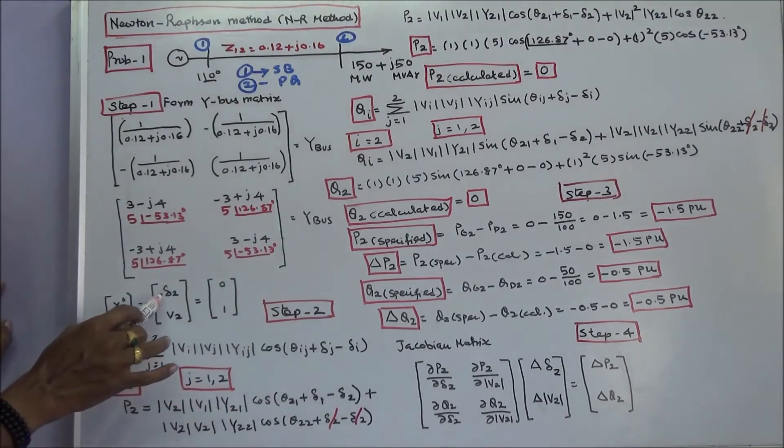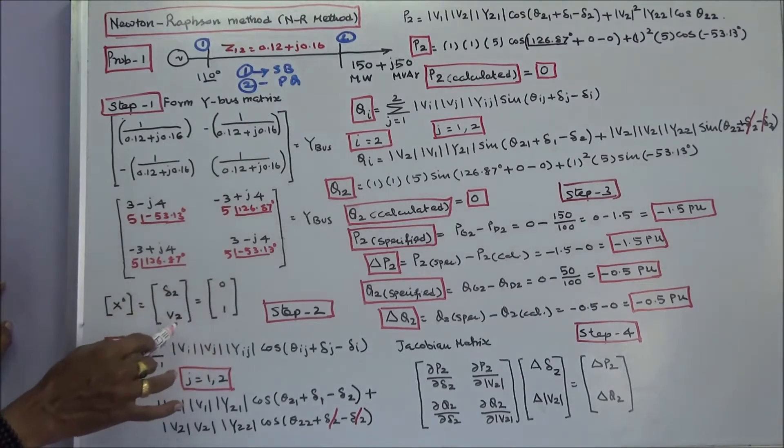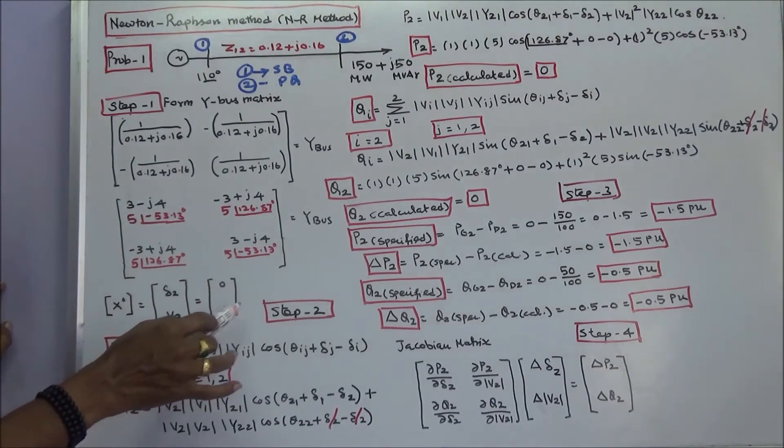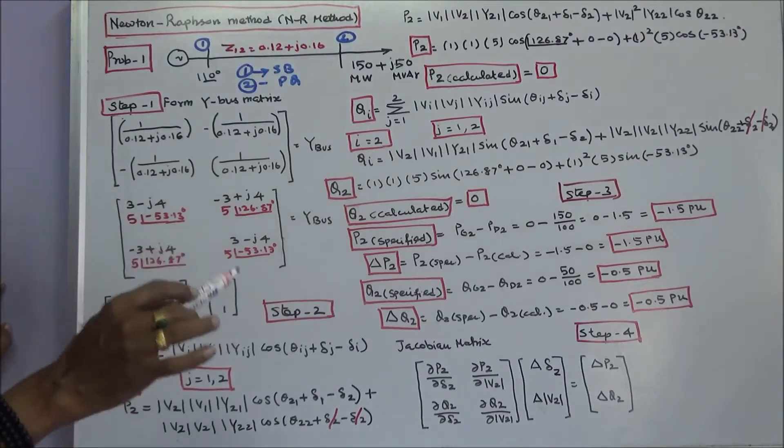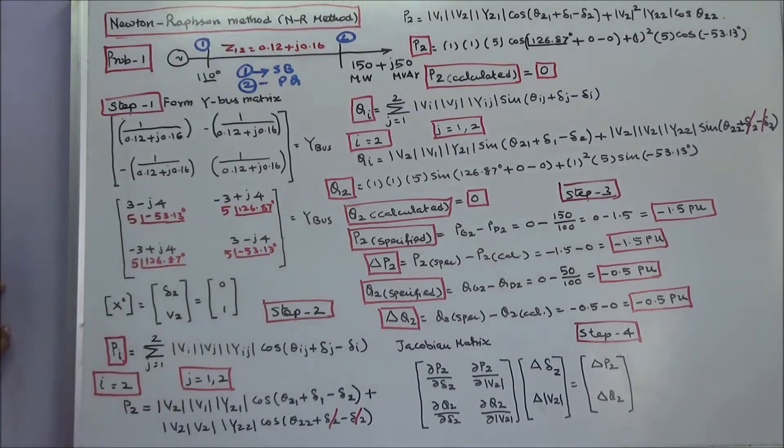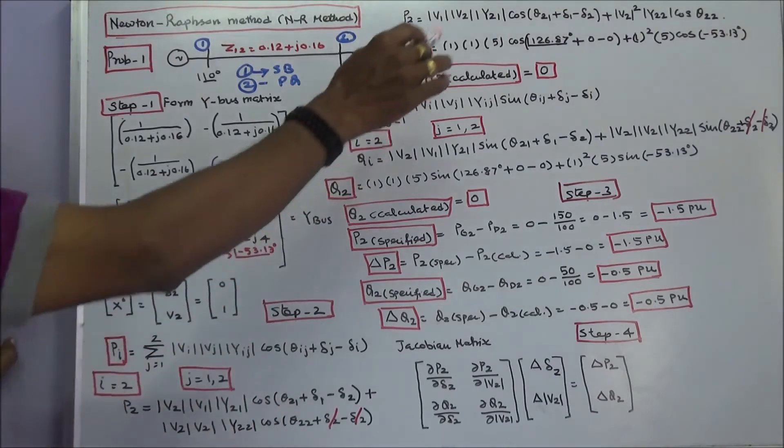Next, I assume delta 2 equals 0, V2 equals 1. Second step: I have to calculate P2 and Q2. We know the formula. Here j is a running variable, i is a fixed variable. I equals 2, j equals 1,2. Now I expand the equation and substitute all the values.